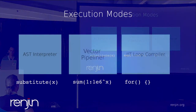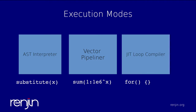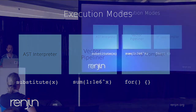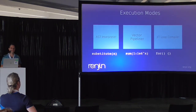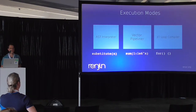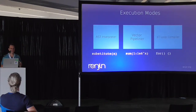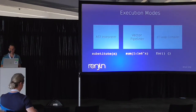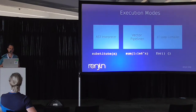The basic execution mode is the AST interpreter, which is meant to handle all of the beauties and complexities of the R language — whether that's substitute, parse, eval, or defining new classes on the fly. Our AST interpreter looks almost exactly like GNU R's interpreter, because that's the only way to make sure it performs the same. But not all R code is super flexible or uses a lot of dynamism.